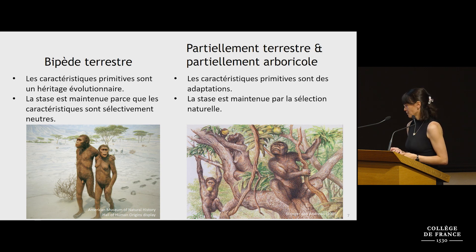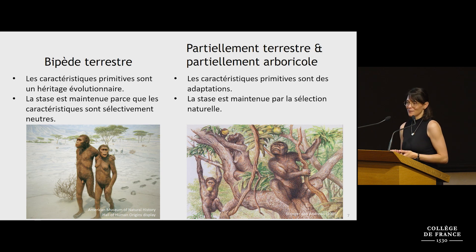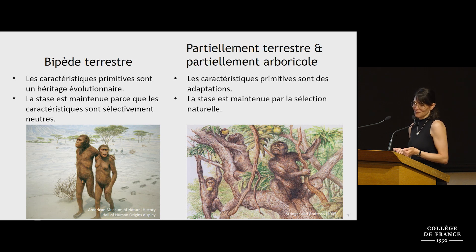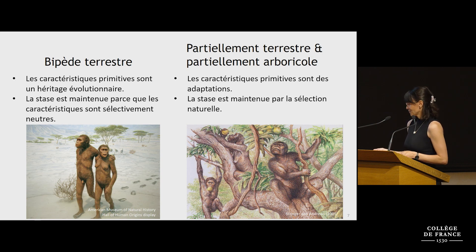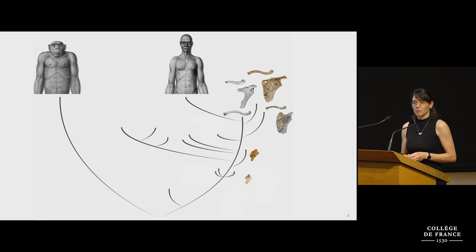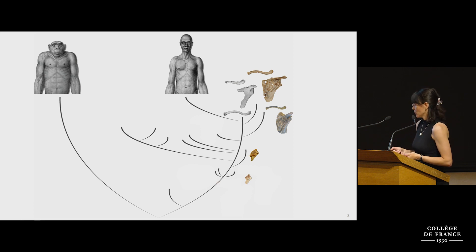Some people in this room were central contributors to this debate the first time around, so I won't rehash it further. Instead, what I'm going to talk about is how new fossils and digital advancements are changing this picture. Before the year 2000 we simply didn't have much of a fossil record of the hominin shoulder — a few reasonably complete specimens from the Pleistocene and only a couple very fragmentary fossils of australopiths from the Pliocene.